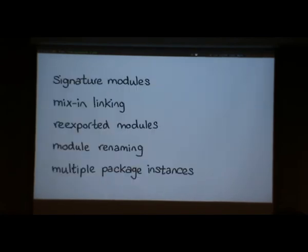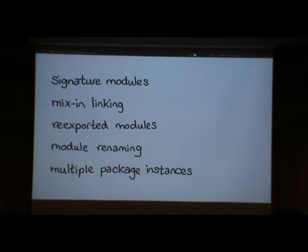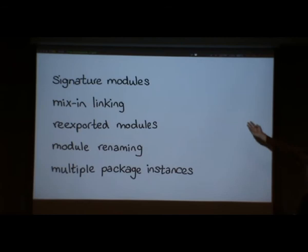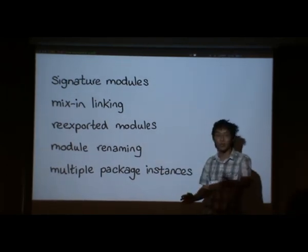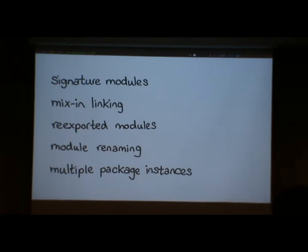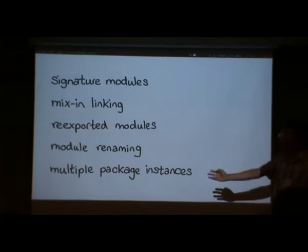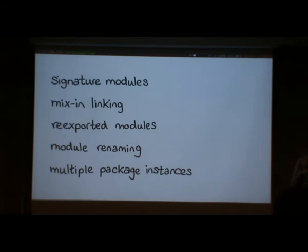Let me wrap up. What did we just see? We saw a bunch of features. We saw signature modules, which let you explicitly state what signature you're depending on — just a bunch of types and data types. We saw mix-in linking, which says how you determine what the implementation of the signature should be. We talked about re-exporting modules — useful if you're the maintainer of base and want to split it into smaller packages. We had module renaming — also useful today when two packages export the same module and you want to rename one out of the way. And finally, multiple package instances: given one package, you may want to install it multiple times with different instantiations.